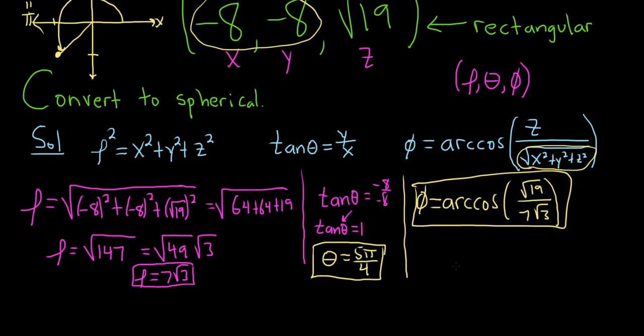And so now we're done. We just have to write our answer in the correct form. So remember, the form is rho theta phi. So this will be rho, which is 7 square root of 3, theta, which is 5 pi over 4, and phi, which is the arc cosine of the square root of 19 over 7 times the square root of 3.